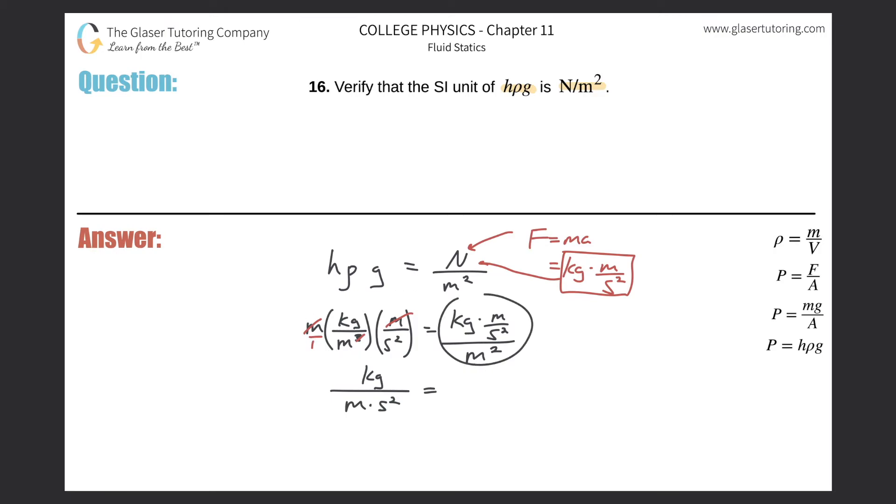So now when I look at what I have over here, since these are multiplied on the top, I can basically bring the second squared down to the bottom. So I'll do that as my first move. This is going to be kilogram times meter all over meter squared times second squared.